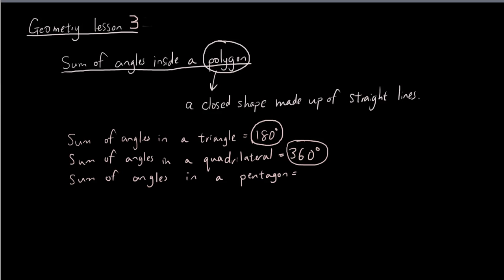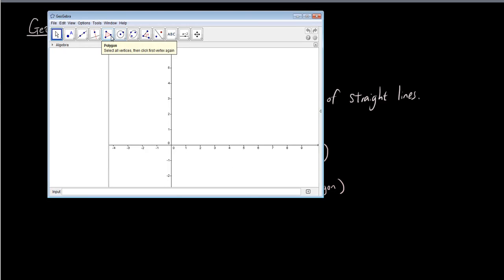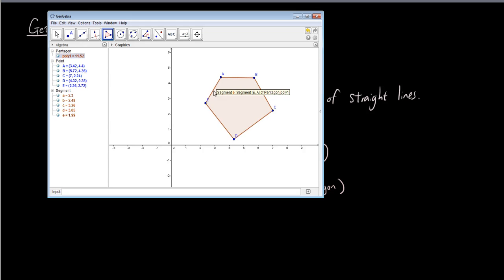So this lesson we're going to talk about the sum of angles in any sort of polygon. The first thing we want to look at is the sum of angles in a pentagon, which is a five-sided shape. Alright, so let's make that shape in GeoGebra. I'm going to go to the polygon tool and I'm going to press five dots, and then press the original dot so I have a five-sided polygon.